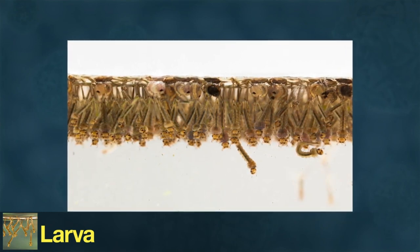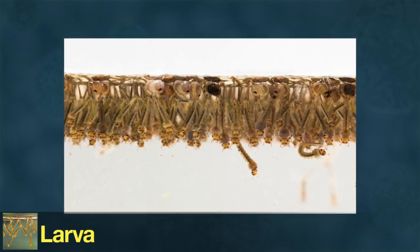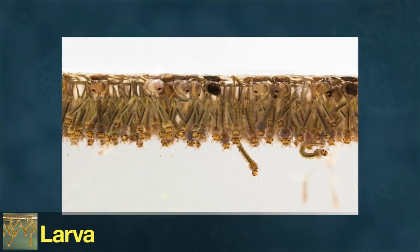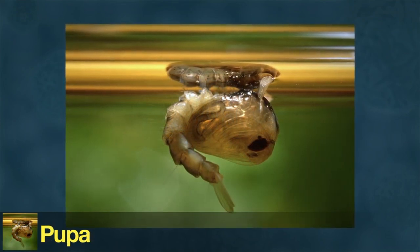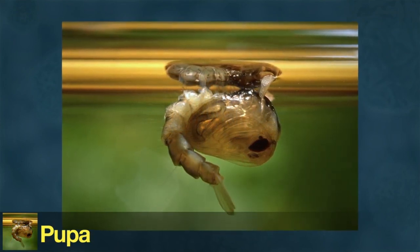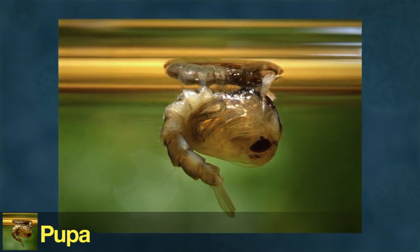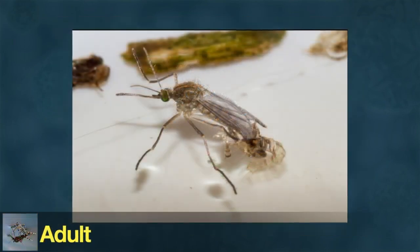After growing and shedding its skin several times, the larva enters the third stage of its life cycle—the pupa. The pupa stays near the water's surface and needs air to breathe, but does not eat. It puts most of its energy into developing into its fourth and final stage—the adult.